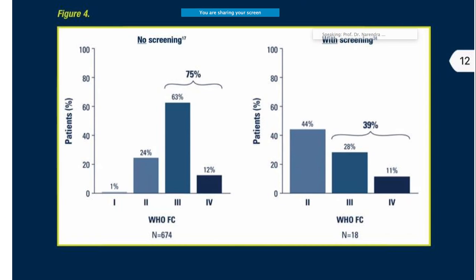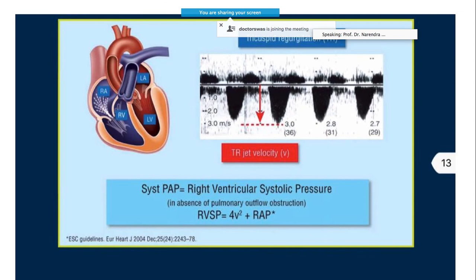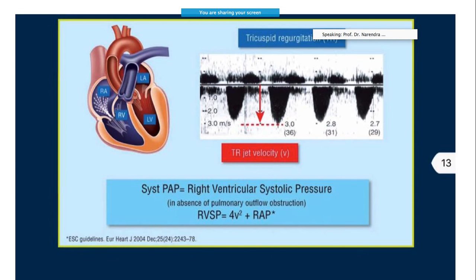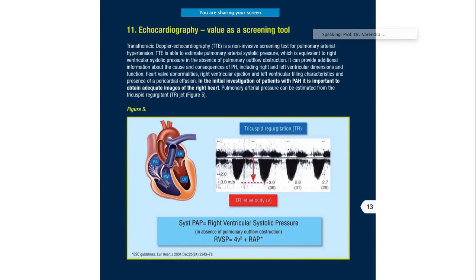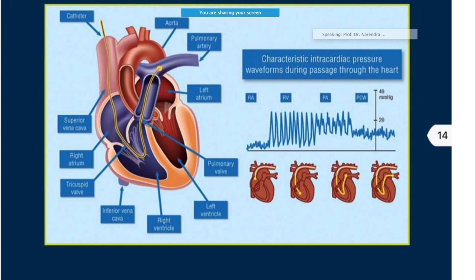Annual screening of patients is very important to limit functional capacity loss. Using echocardiography, the systolic pulmonary artery pressure equals the RV systolic pressure, and RV systolic pressure equals four times the velocity squared plus the right atrial pressure. This is a wonderful screening tool which is easily performed.